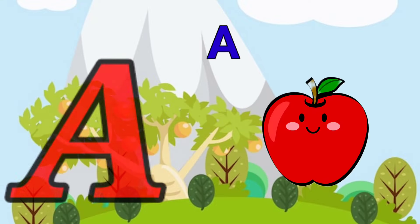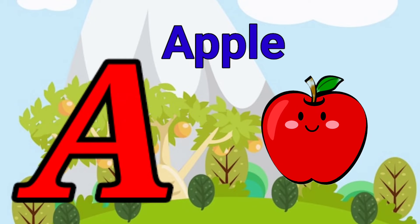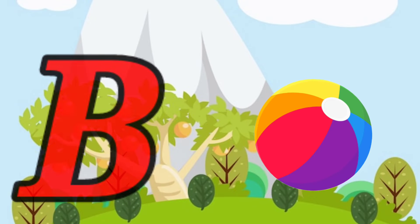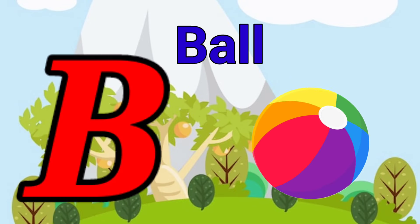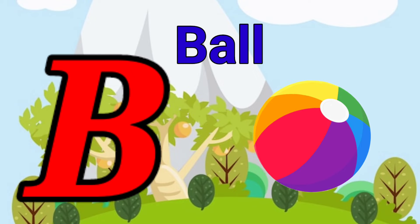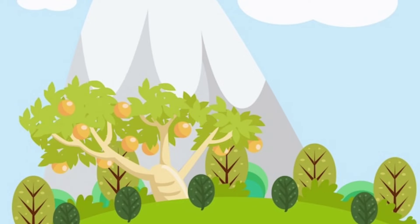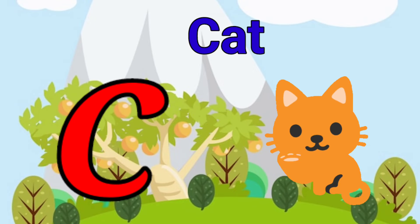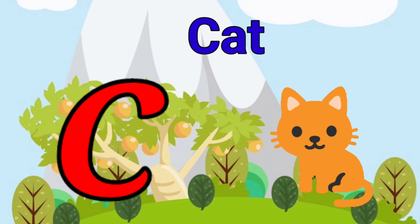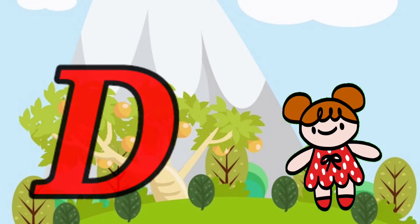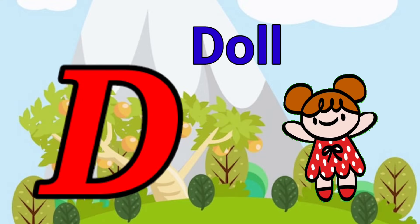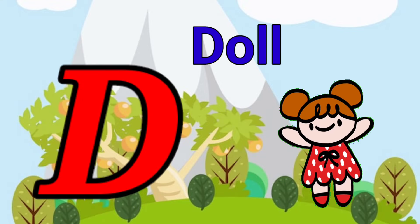A is for apple, a-a-apple. B is for ball, b-b-ball. C is for cat, c-c-cat. D is for doll, d-d-doll.